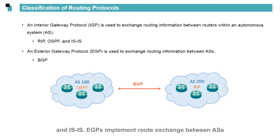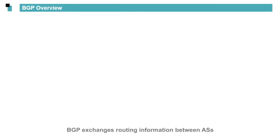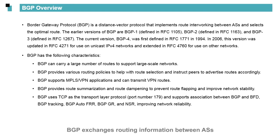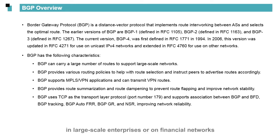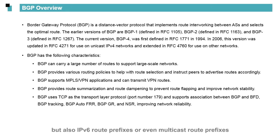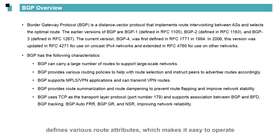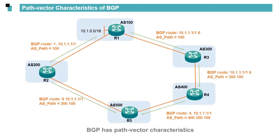EGPs implement route exchange between ASs. BGP is a typical EGP and is widely used. BGP exchanges routing information between ASs. It can carry a large number of route prefixes and is commonly used in large-scale enterprises or on financial networks. BGP can be easily extended to support not only IPv4 prefixes, but also IPv6 route prefixes or even multicast route prefixes. In addition, BGP has powerful routing policy capabilities and defines various route attributes, which makes it easy to operate.